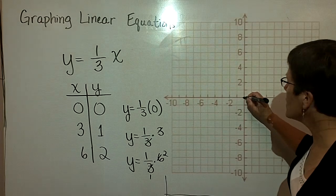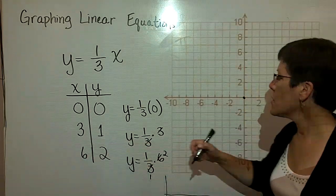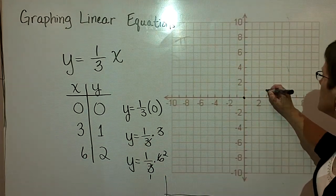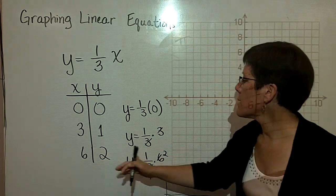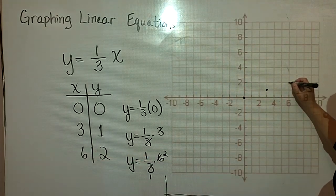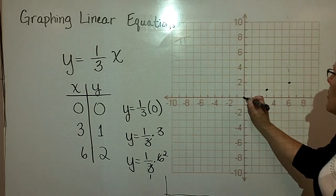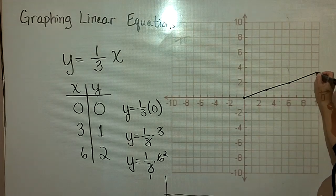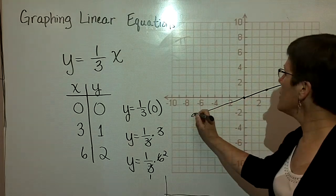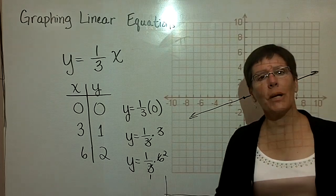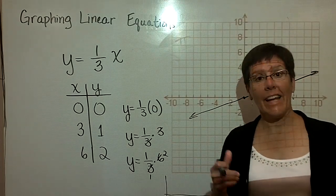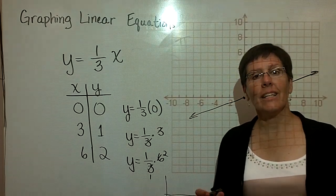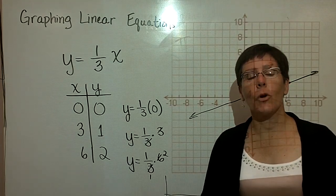Then go ahead and graph those ordered pairs. The first one is exactly the origin. When x is 3, y is 1. When x is 6, y is 2. They do line up nicely. I go ahead and draw a straight line through those three ordered pairs and put arrowheads on each end. And I have a graph of the solution of that linear equation. I'm going to pause and maybe come back and do a few more, including one that is an application.